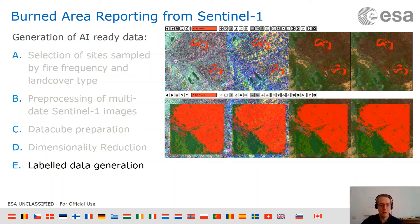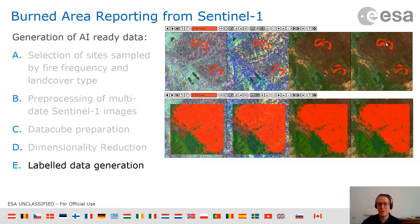Skipping steps B, C, and D, I'm going straight to step E. The labeled data generation uses the IRIS toolkit, where you draw pixels onto the area of interest using whatever class you're interested in. Here I'm using different layers of Sentinel-1 data and different band combinations to better visualize where there's been a fire, and then comparing that with Sentinel-2, which is an optical dataset where it's a little bit easier to see changes in the landscape. Then a click of a button and we have a rough and ready labeled dataset, which can then be quickly and easily trimmed and cleaned up.